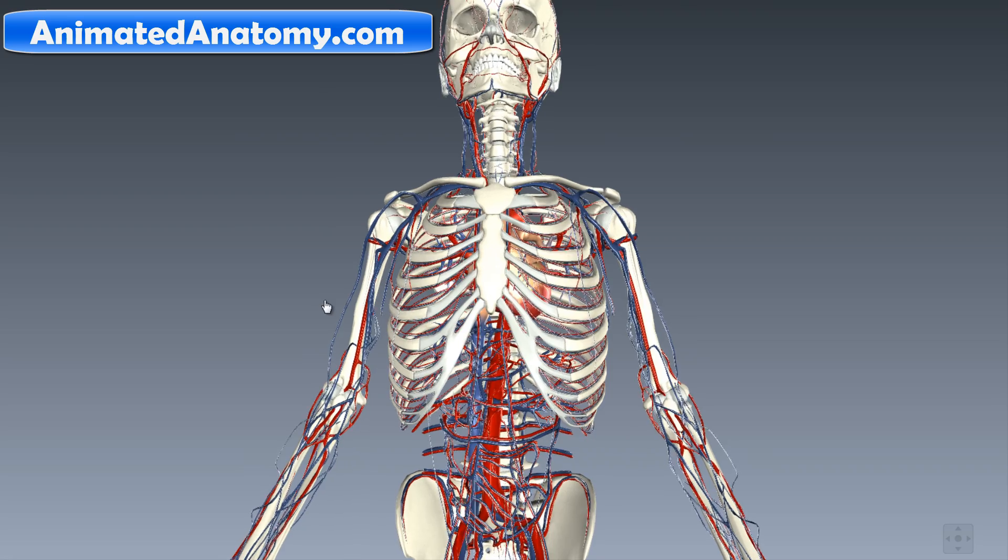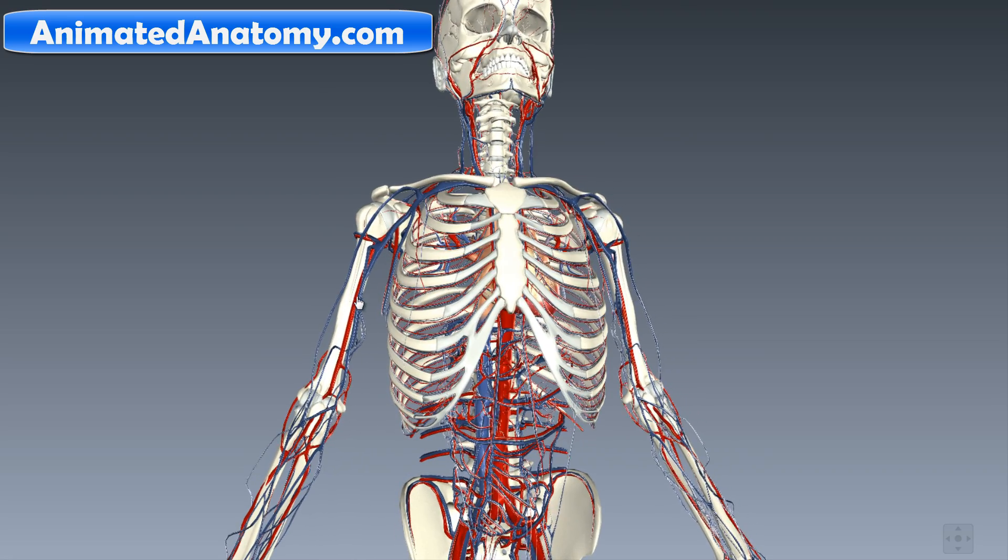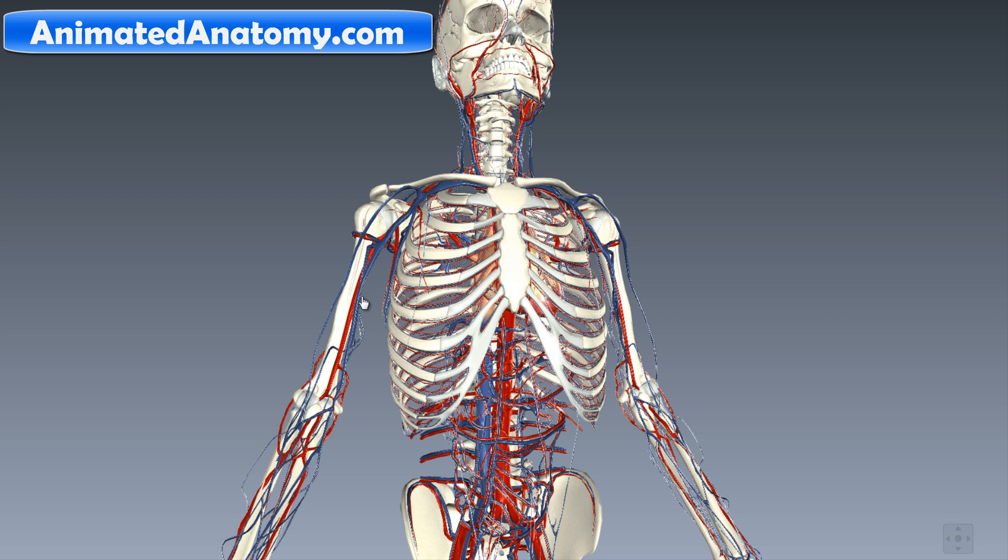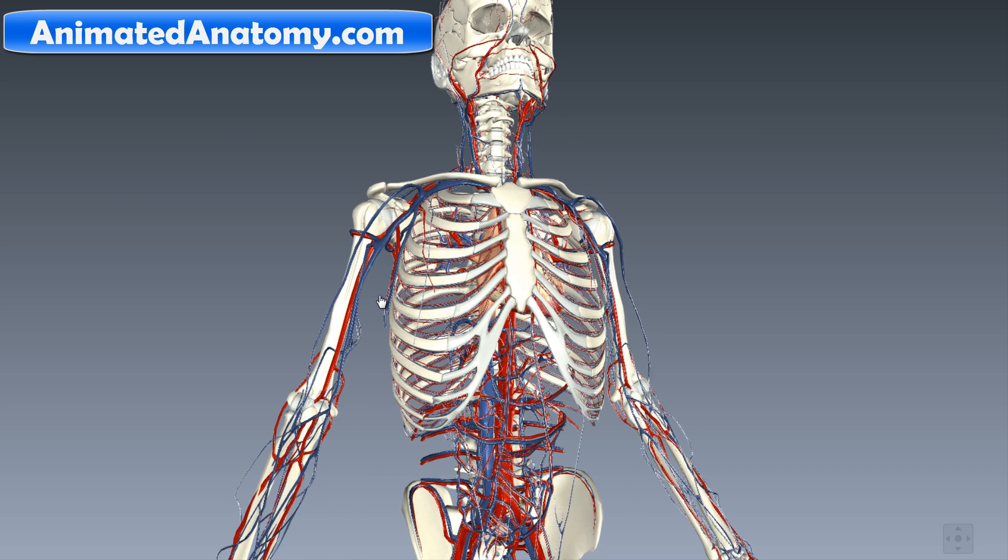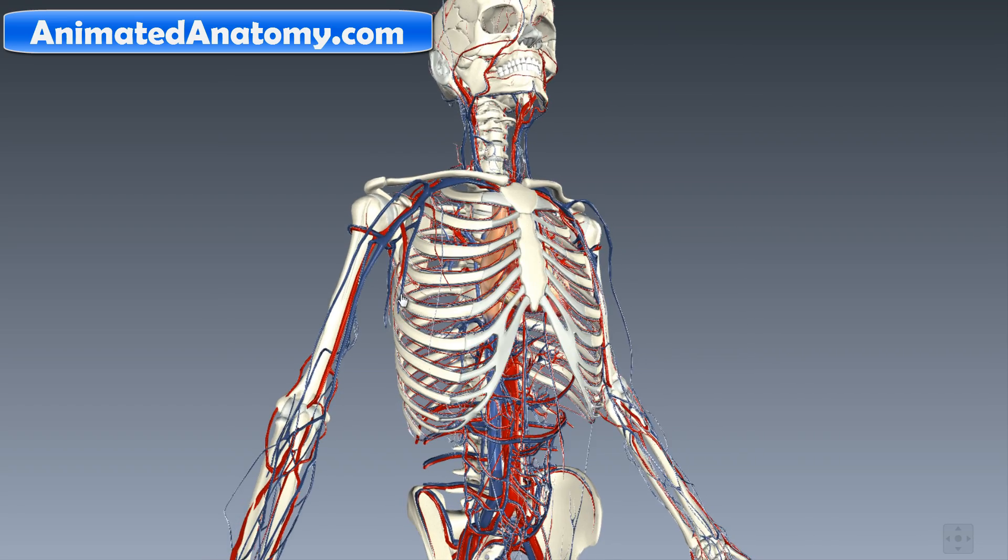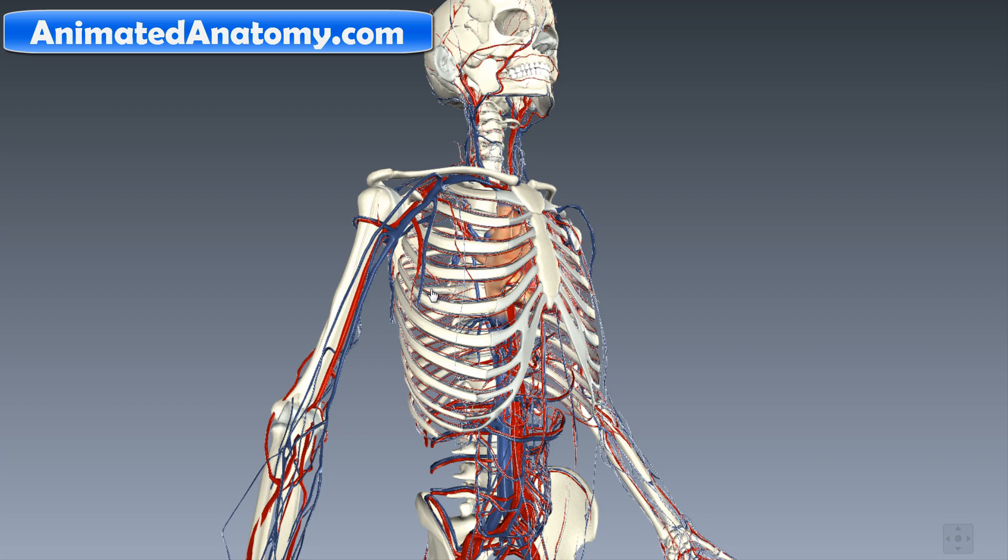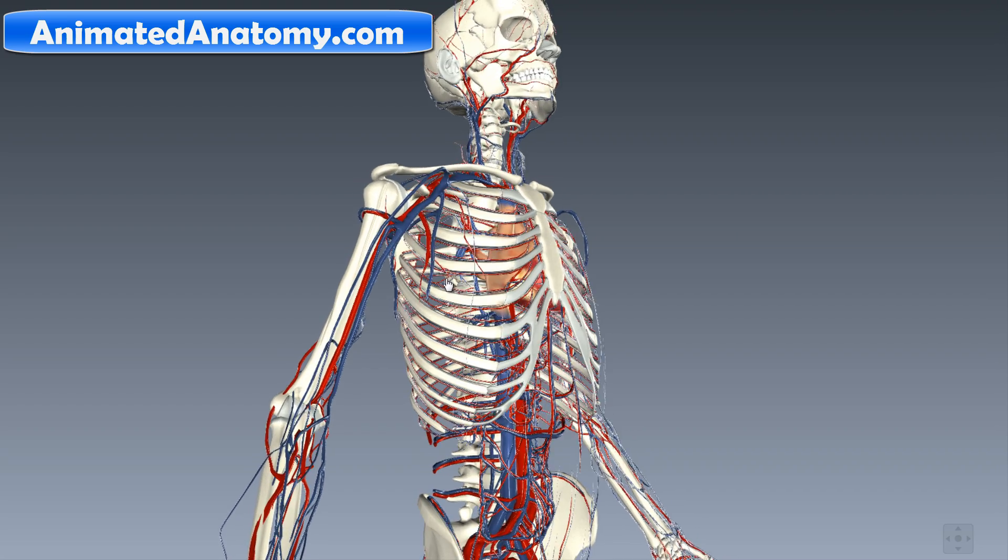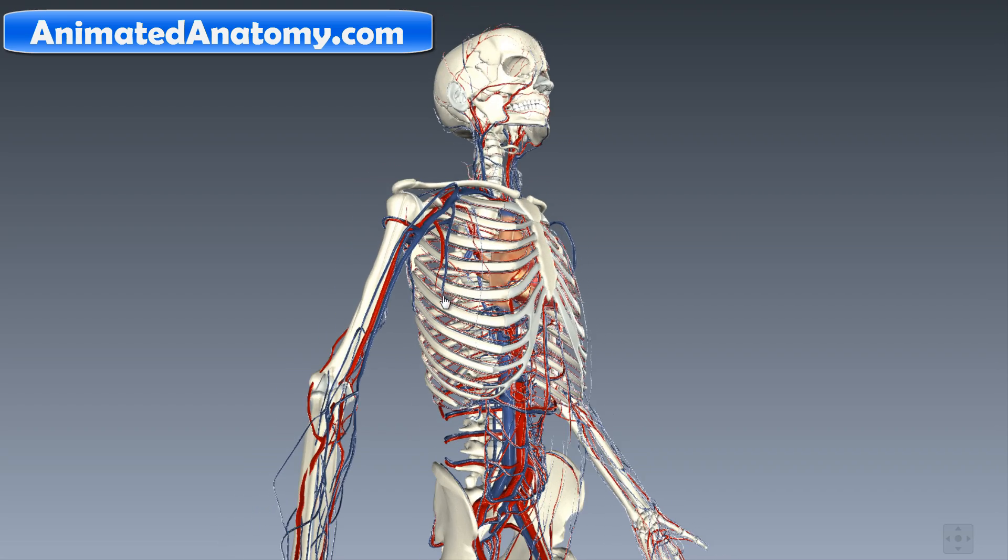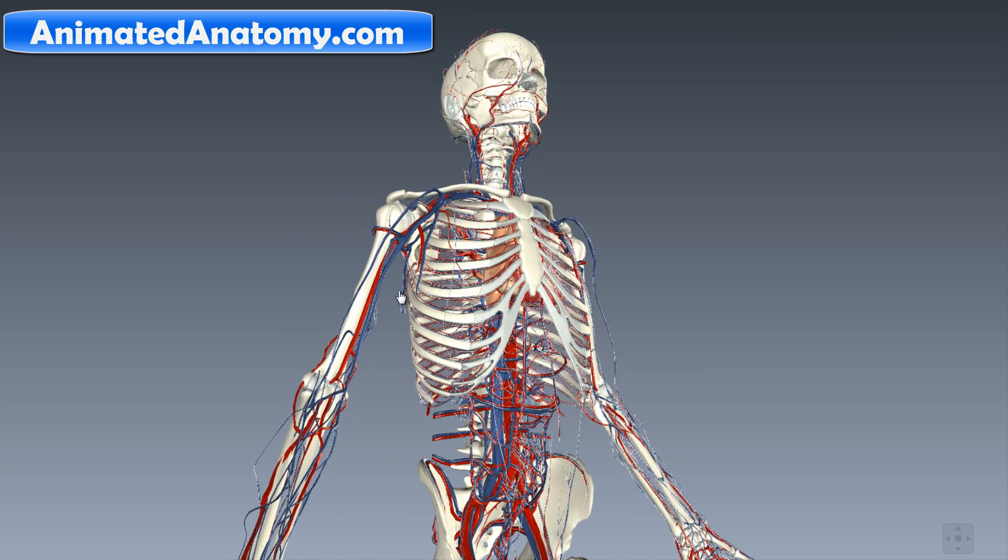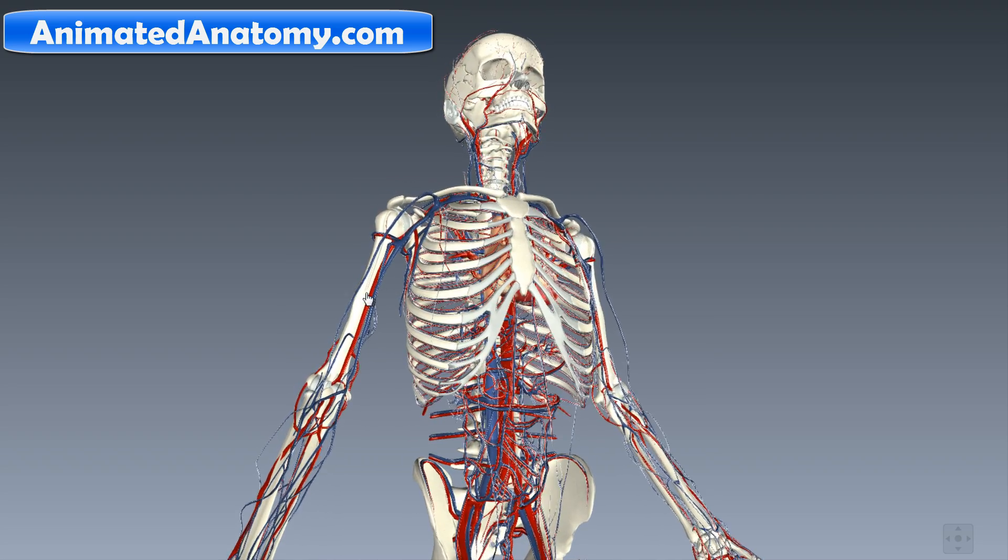The circulatory system is also called the cardiovascular system. It permits blood transport, oxygen, carbon dioxide, hormones and blood cells to and from the cells in the body. It helps to fight diseases, stabilizes blood temperature, pH values, and maintains homeostasis.